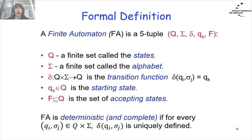We have Q, a finite non-empty set of states. We have sigma, a finite set called the alphabet. We have delta, the transition function — we move from current state and input letter to the next state, so we have a Cartesian product between Q and sigma, and the result is one state of Q. It can be written delta(Qi, sigmaJ) = QK. We have a starting state QS which belongs to Q, and the last element of the 5-tuple is F, the set of accepting states, which is a subset of Q.